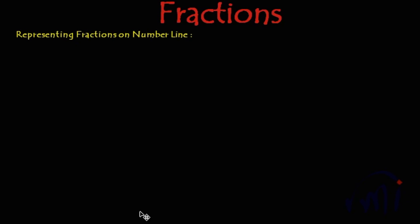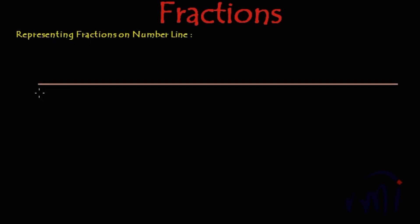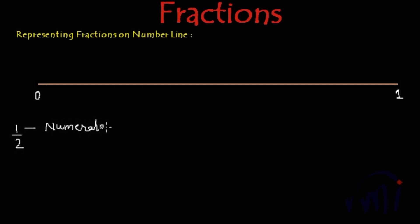Suppose we have a number line like this, where this is 0 and this is 1. Suppose you want to represent 1 by 2 on this number line. This is called numerator and this part is called denominator.